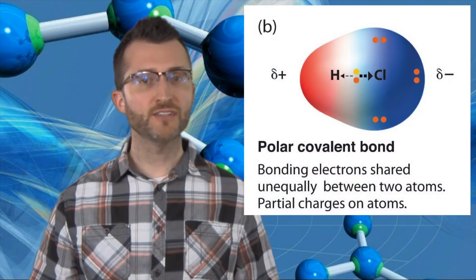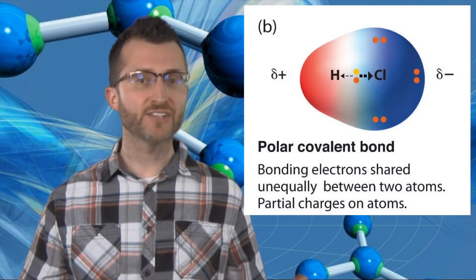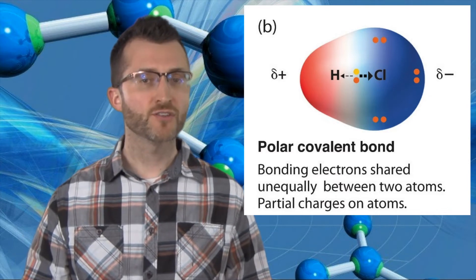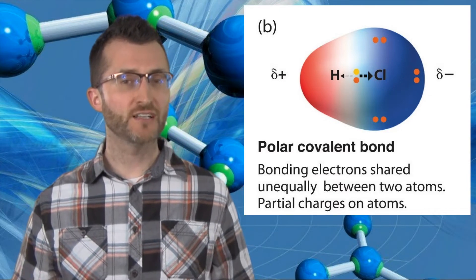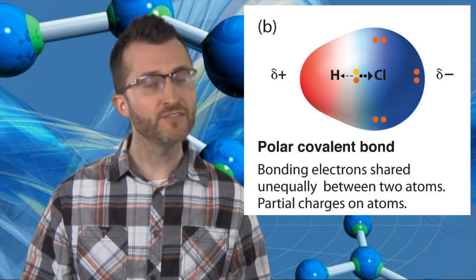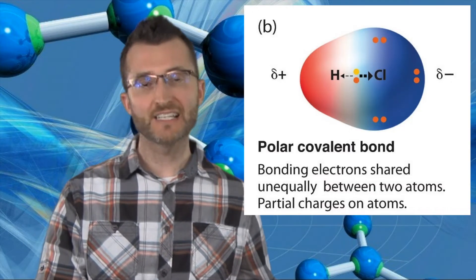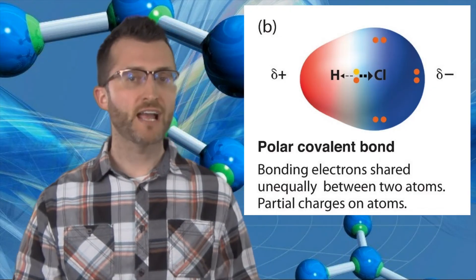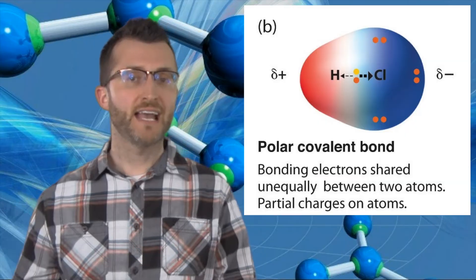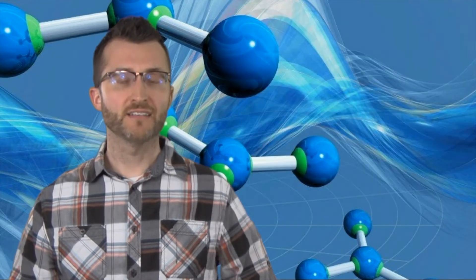If we look at two different atoms, let's say HCl, we have two different electronegativity values, so those electrons cannot be shared equally. Whichever element has the higher electronegativity value, we say is the negative side of the molecule, and whichever atom has the lower electronegativity value, we say has the positive end of the molecule.